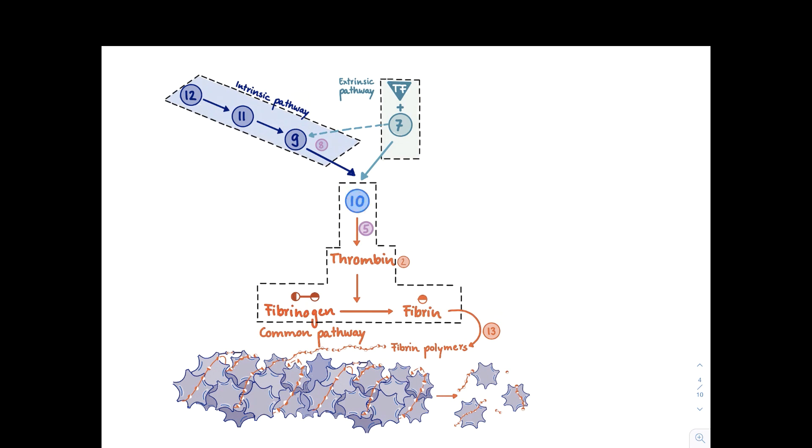If we have factor 10, we know how the system runs. Then we get our thrombin and thrombin activates the most important component here to chop off fibrin from fibrinogen. And this polymerizes and that seals this platelet plug forming a clot.